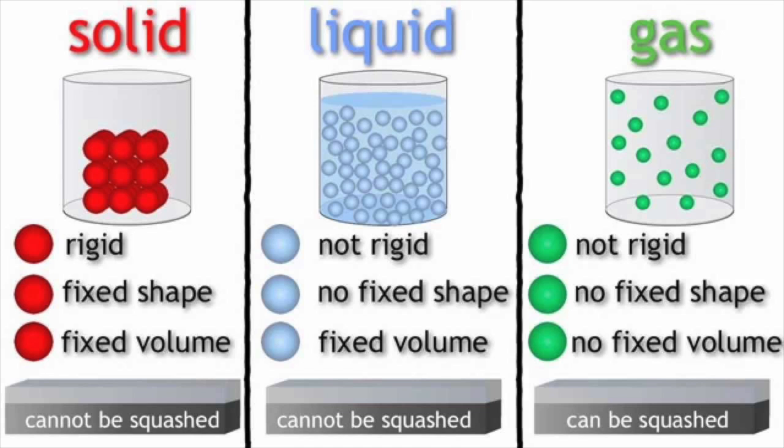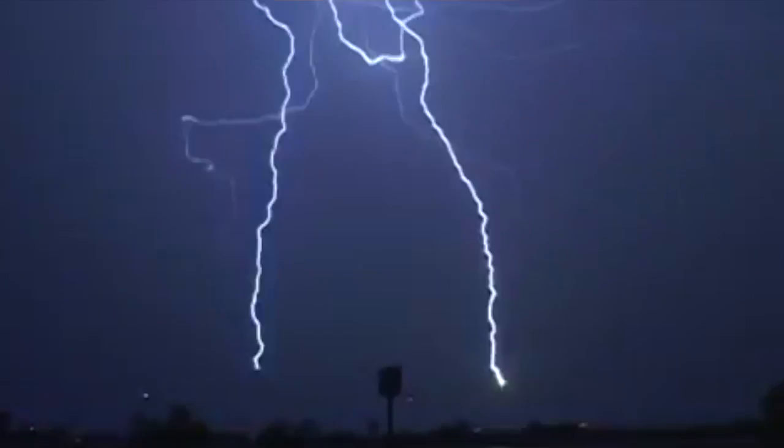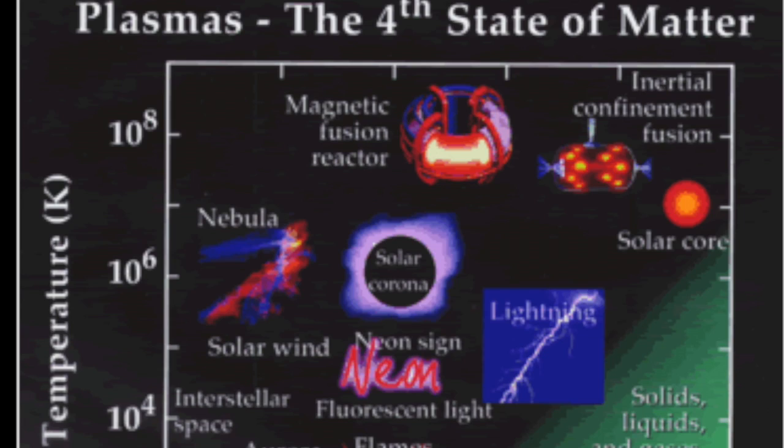Hello everyone. The topic we were assigned to research was states of matter. Our natural phenomenon was lightning because our project is about plasma as a state of matter. Lightning is a plasma and during this video you will learn a little bit about it. We will also be asking you some questions throughout the video, so it would be best if you pay attention.